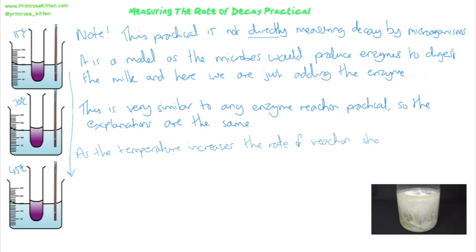That's for the same reasons we'd expect any enzyme reaction to go faster at higher temperatures. The substrate and the enzyme have more kinetic energy, so they're going to be moving around more, colliding and reacting with each other faster. But at really high temperatures, the lipase enzyme is likely to be denatured, which means the active site changes shape, so the lipids can't bind anymore and the reaction stops.